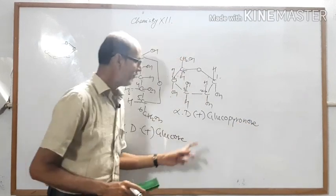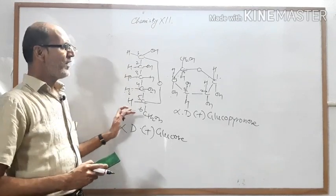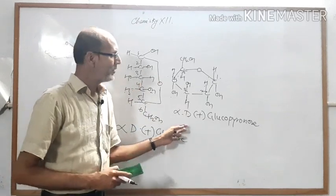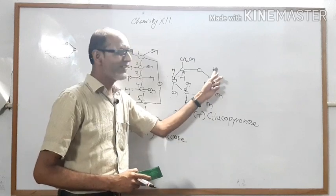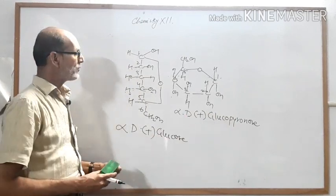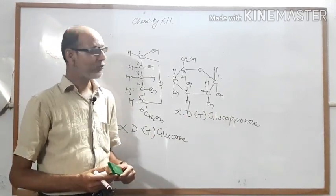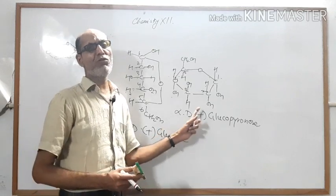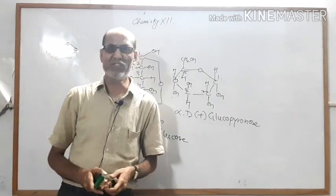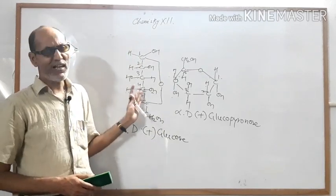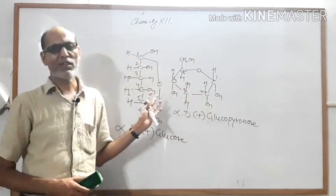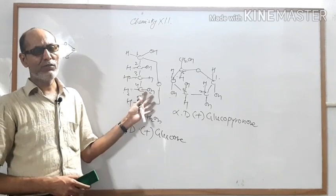For the beta structure of glucopyranose, only the OH at carbon number one goes to the upper side and H goes to the bottom. Your next question: draw the structure of beta-D-glucopyranose. We have drawn five structures of glucose. We draw these because one structure cannot explain all the properties. In the next topic we will discuss the chemical properties and preparation of glucose. Thank you, good night.